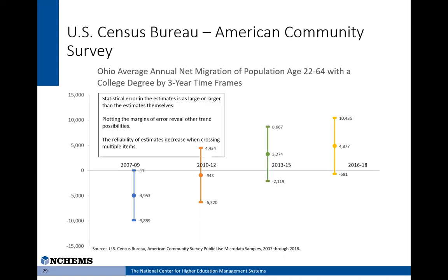If we actually calculate and plot the associated 90 percent margins of error about the estimates, we notice that the estimates are not so stable — large errors are bounding them. Even with the three-year time frames, the margin of error is as large as or larger than the estimates themselves. Our true population figures could potentially fall rather far from these estimates, and thus the trend we see could actually be something very different — possibly even a flat or negative trend, or there may not even be any apparent trend at all. Ignoring the margins of error here could lead us to some false conclusions about the net migration of degree holders in Ohio.